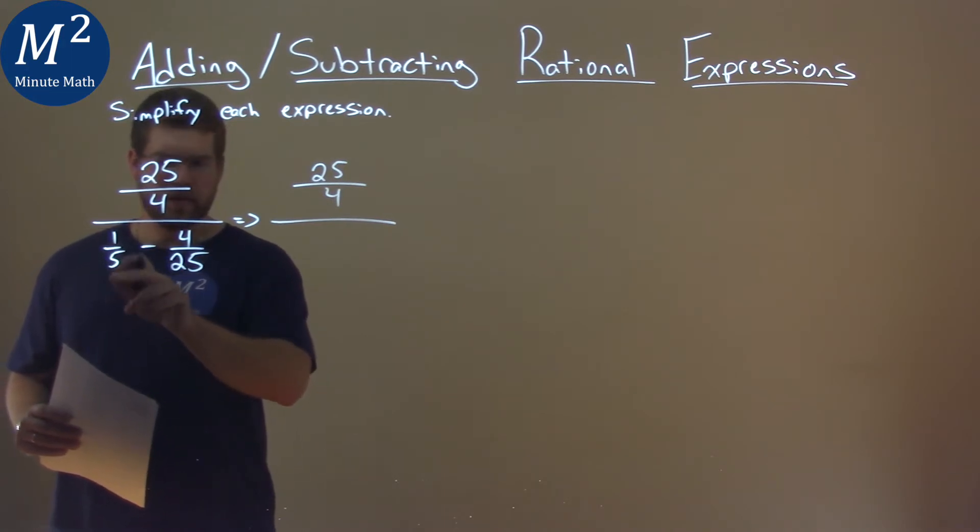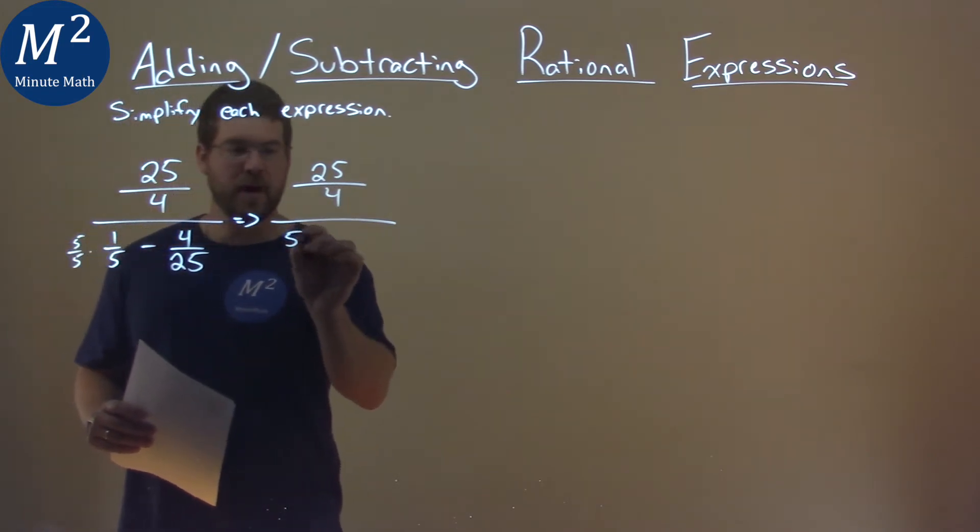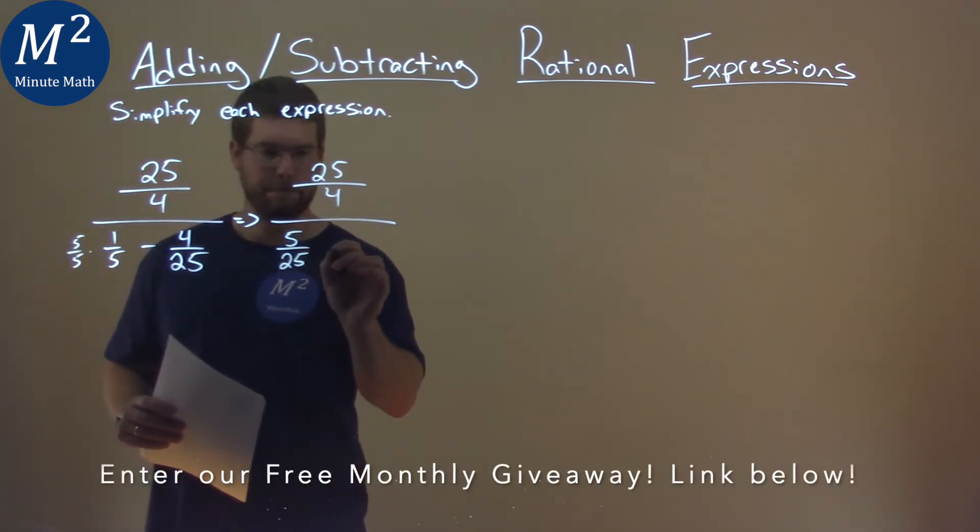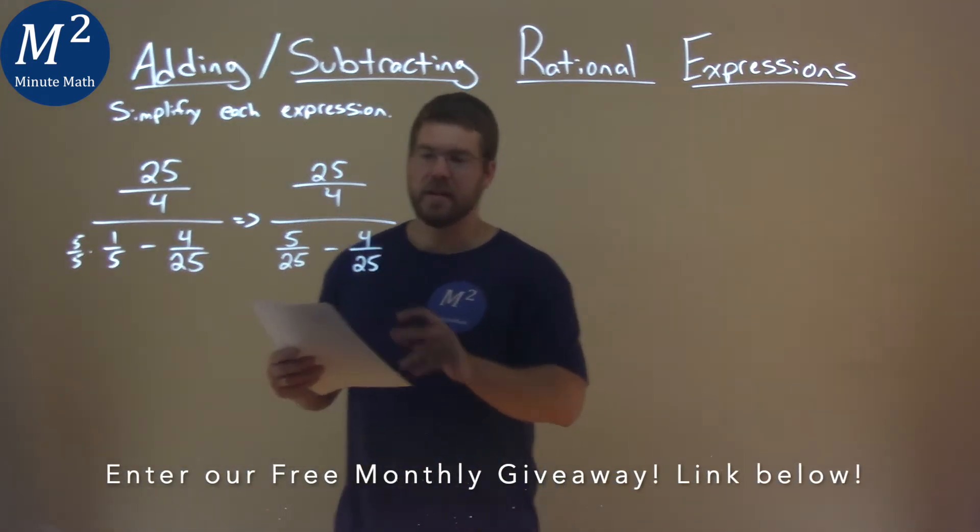So if I multiply this by 5 over 5, we then have 5 over 25 minus 4 over 25, and now we have a common denominator.